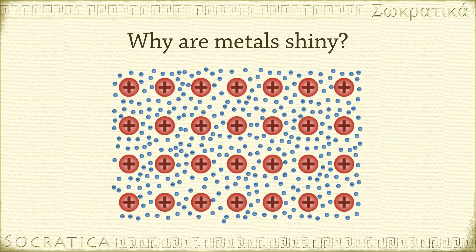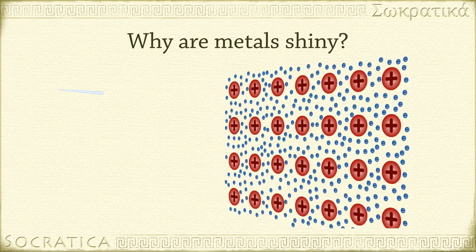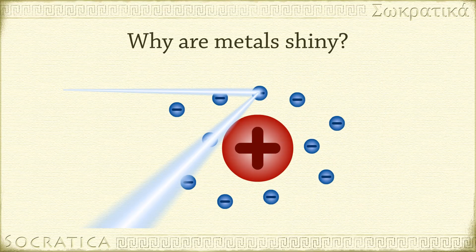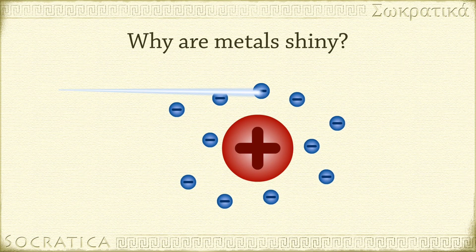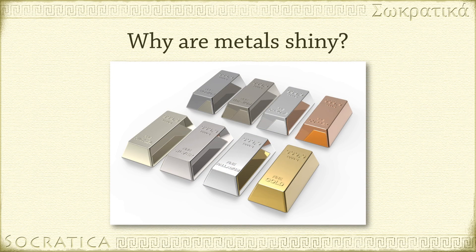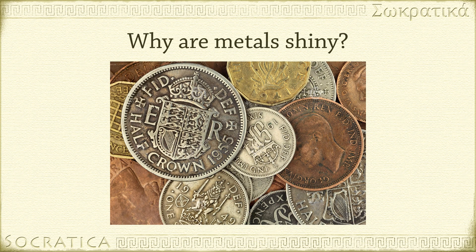The highly mobile sea of electrons is responsible for the shininess of metals. Photons of light are more readily absorbed by free electrons, which can easily jump to a higher energy level. Then, when they fall back down a level, the energy is re-emitted as light. The color of the metal is determined by the wavelength of light which is re-emitted.